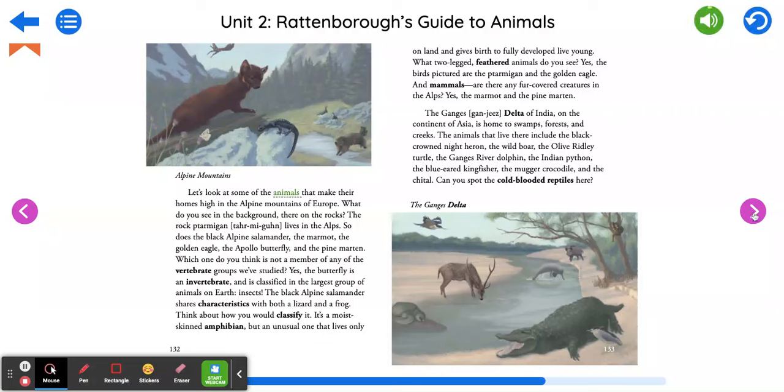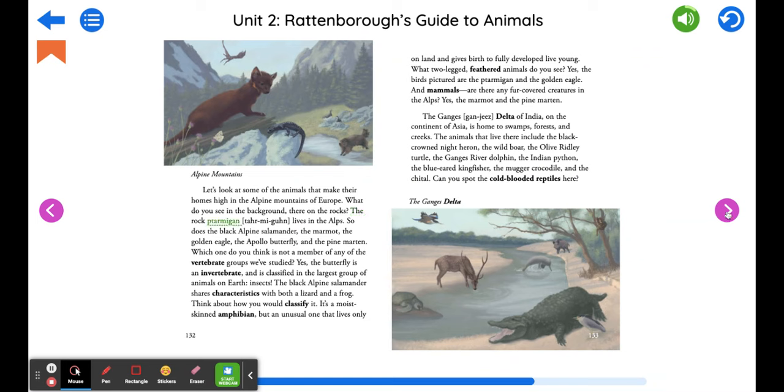Let's look at some of the animals that make their homes high in the alpine mountains of Europe. What do you see in the background there on the rocks? The rock ptarmigan lives in the alps. So does the black alpine salamander, the marmot, the golden eagle, the apollo butterfly, and the pine marten.